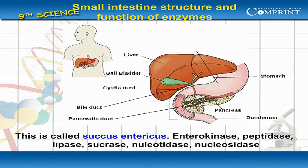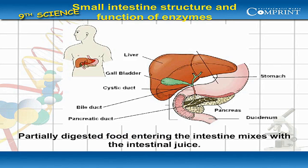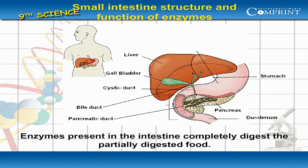Enterokinase, peptidase, lipase, sucrase, nucleotidase, and nucleosidase are some of the enzymes present in the intestinal juice. Partially digested food entering the intestine mixes with the intestinal juice, and the enzymes present in the intestine completely digest this partially digested food.